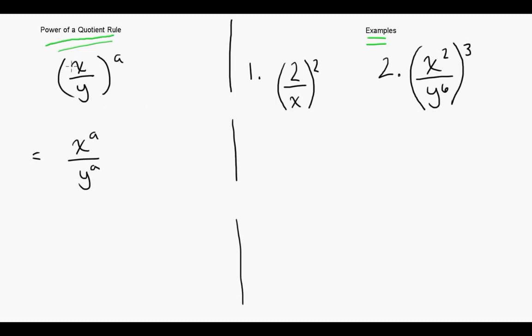Looking at the power of a quotient rule, if we have a number x over a number y and they're all to the exponent a, we can bring that a into the bracket and we have x to the exponent a over y to the exponent a.